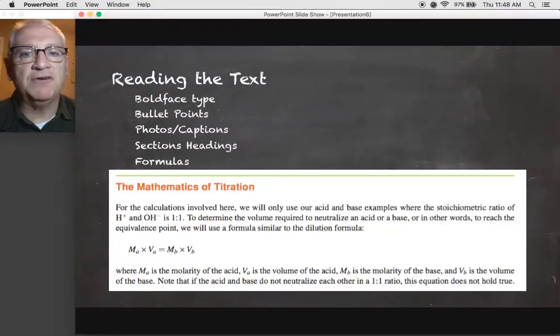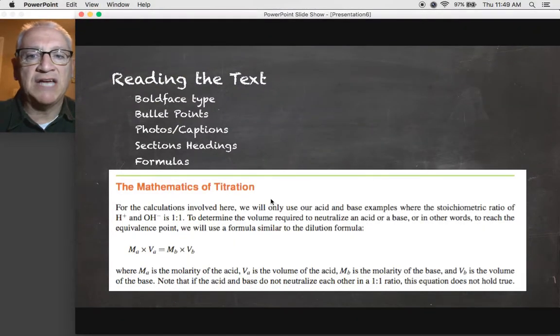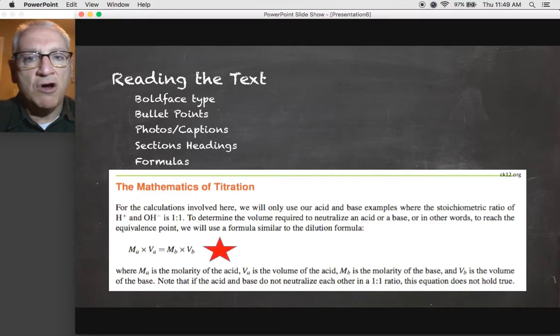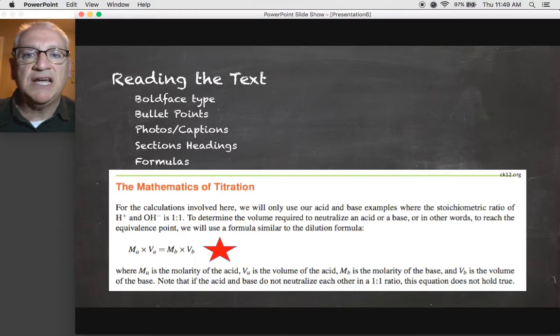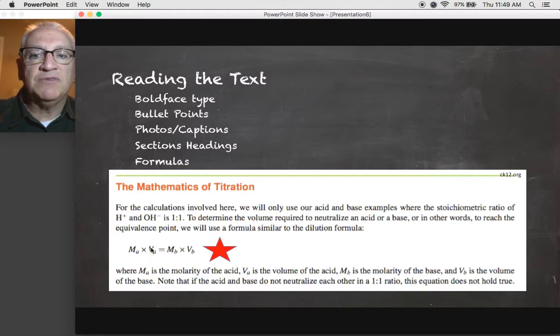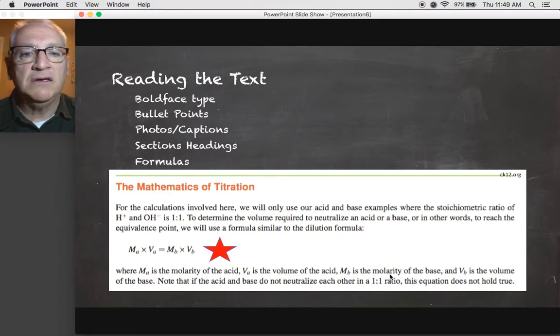One of the other things you'll find are formulas. The mathematics of titration. These formulas become very important. And one of the techniques that I like to do is I like to put a little red star next to the formula. So if I'm looking for a formula, I flip through my text really quickly and I say, there's the red one. And I know that that's a formula associated with titration. Mass of the acid times the volume of the acid equals mass of the base times the volume of the base. Really important to know what the variables mean. And they're listed right here underneath the star.